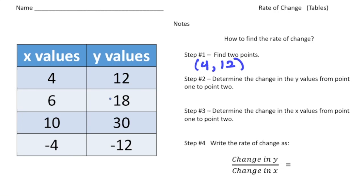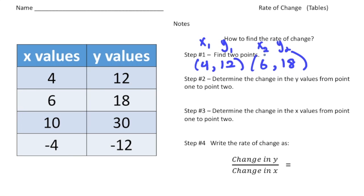Our first point is (4, 12) and our second point is (6, 18). Remember: 4 is our first x-value, 6 is our second x-value, 12 is our first y-value, and 18 is our second y-value.